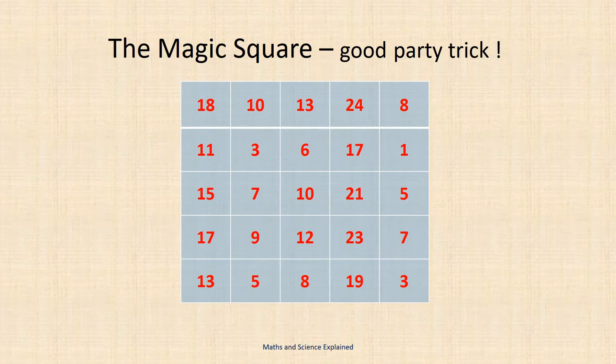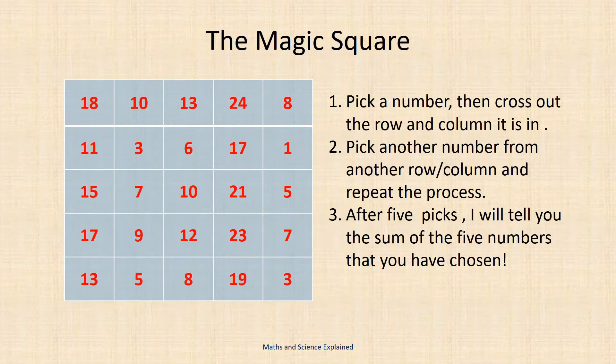A way to demonstrate this is by way of a party trick. Firstly pick a number and then cross out the row and column it's in. Then pick another number from another row and column and repeat the process. After five picks I will tell you the sum of the five numbers that you have chosen.